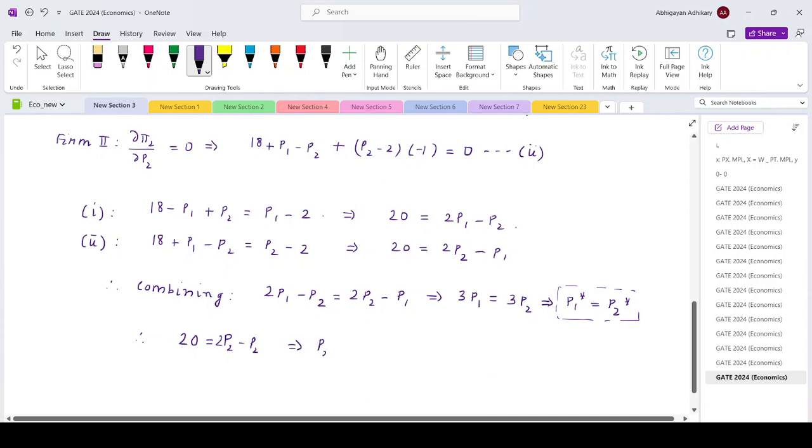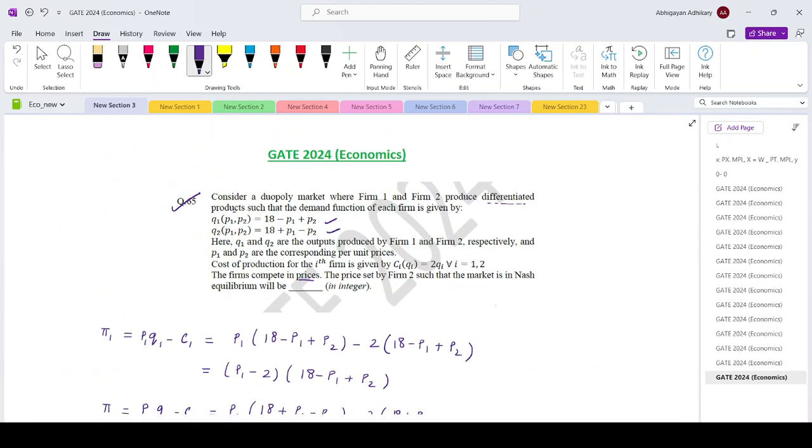So that means P2 star equals 20. The optimal price set by firm 2 is 20. That is your answer for question number 65. Thank you.